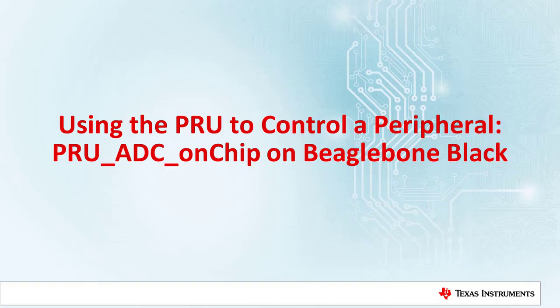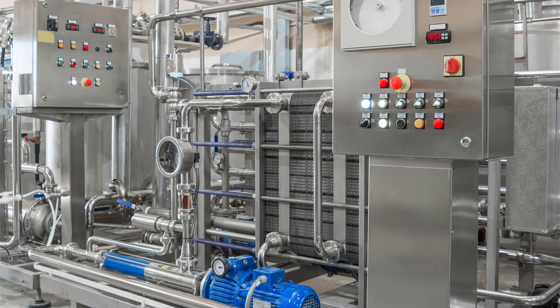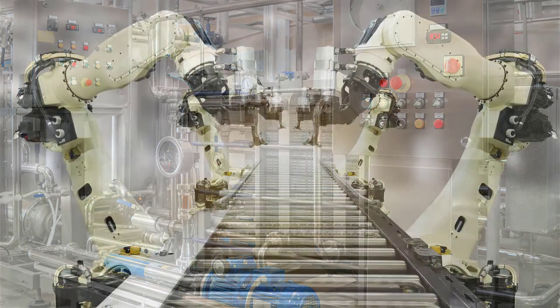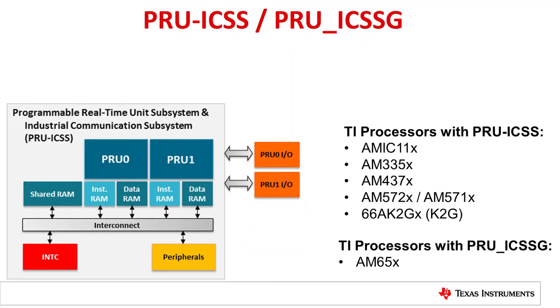In some situations, it makes more sense to control a peripheral with a deterministic, dedicated processor rather than a general-purpose ARM core. Applications range from a dedicated overvoltage monitoring system, where the processor load can be offloaded from the ARM, to a real-time industrial environment where stimulus requires a response from the processor in a known amount of time. My name is Nick, and today we are going to explore how to use the PRU core to control a peripheral on any TI processor with a PRU ICSS or PRU ICSSG.